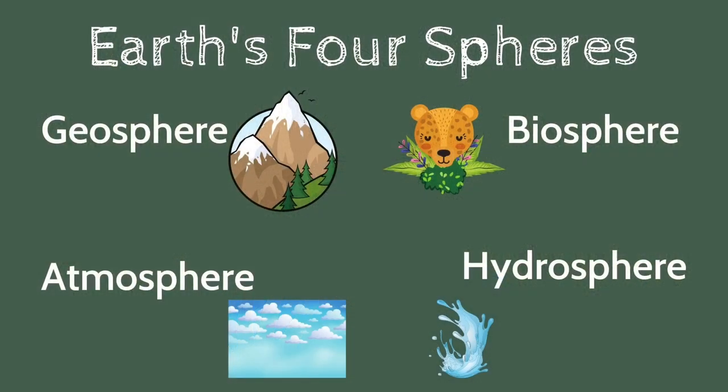All of these different things are called earth materials, and we break them into four different groups: the biosphere, the geosphere, the hydrosphere, and the atmosphere. Today we're going to look at each one of those spheres individually, and then we are going to talk about how those spheres interact with each other.